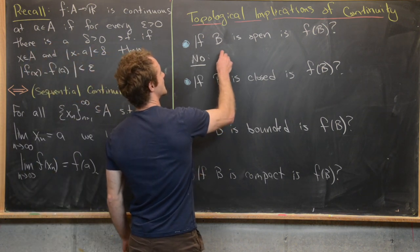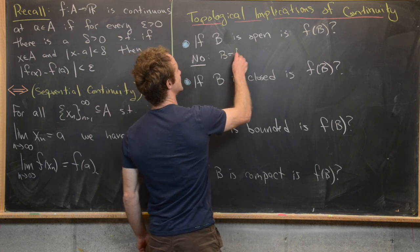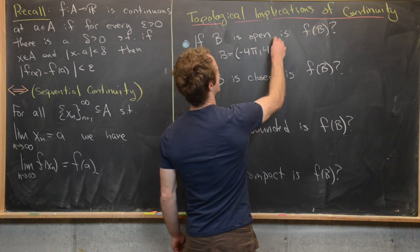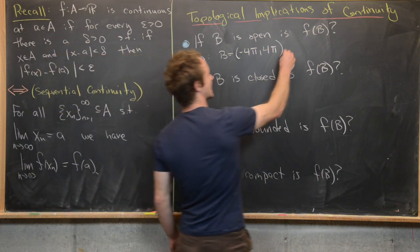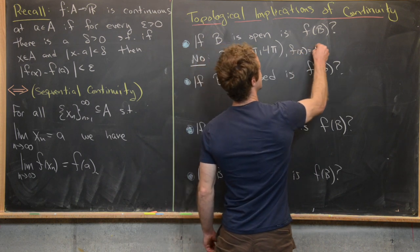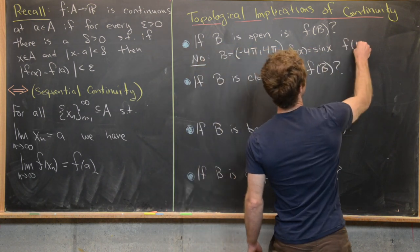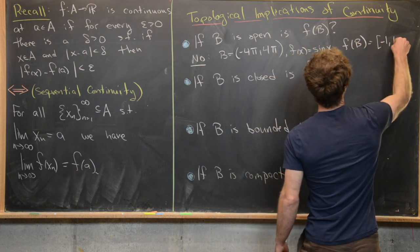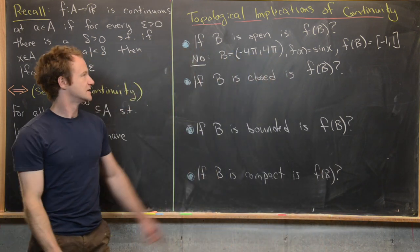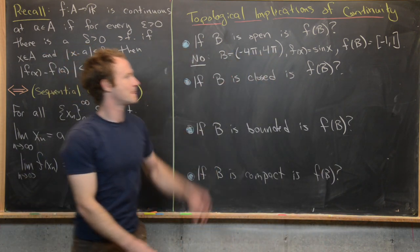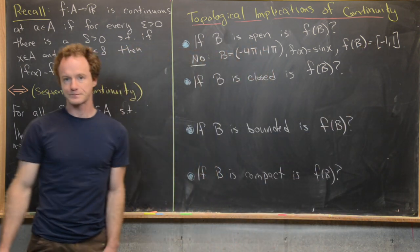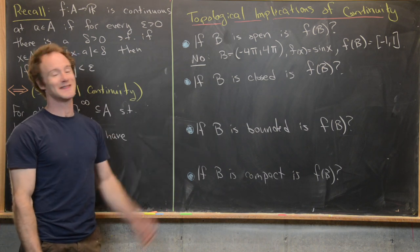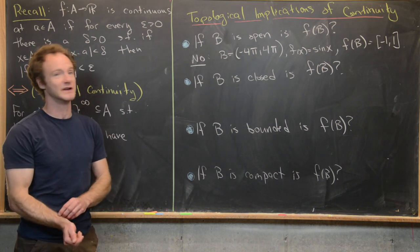Take B to be the open interval from negative 4π to 4π, and take f(x) = sin(x). The image f(B) is the closed interval negative 1 to 1. So here we have an open set mapping to a non-open set. It's a closed set — sets are allowed to be both closed and open, but this one is only closed.